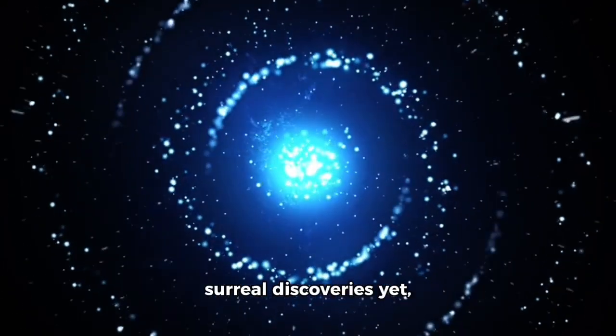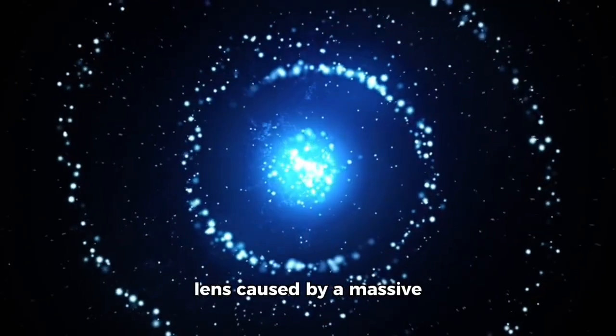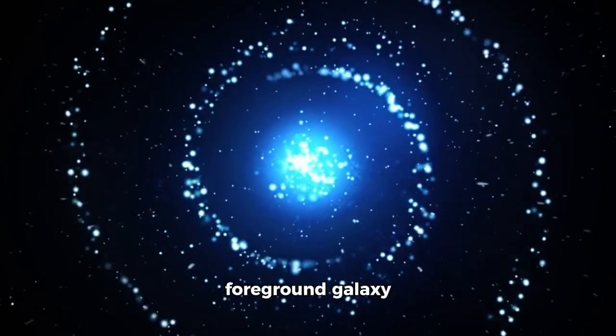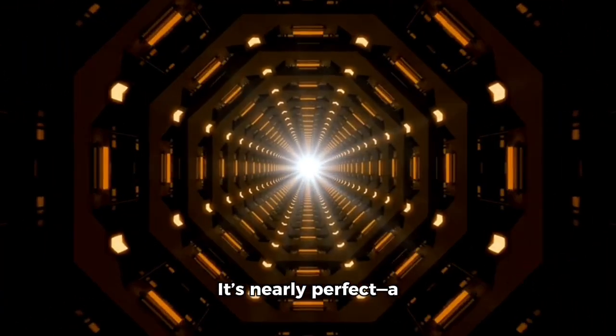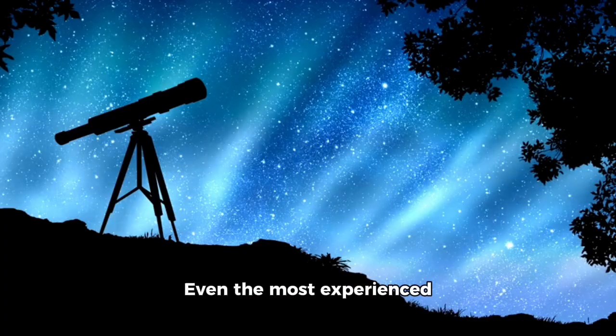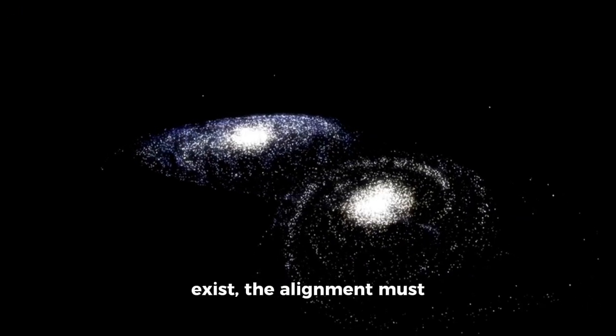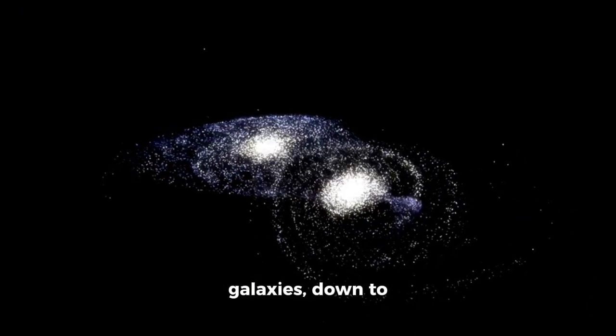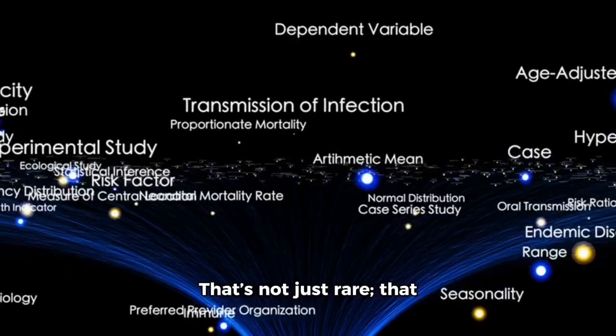In one of the most surreal discoveries yet, James Webb imaged what's known as an Einstein ring, a gravitational lens caused by a massive foreground galaxy bending the light of one directly behind it. However, this ring surrounding the galaxy J418 is not a typical lens. It's nearly perfect—a complete and unbroken circle of light that resembles mathematical symmetry. Even the most experienced astronomers were taken aback. For such a picture to exist, the alignment must be exact between the two galaxies, down to fractions of a degree across billions of light years.